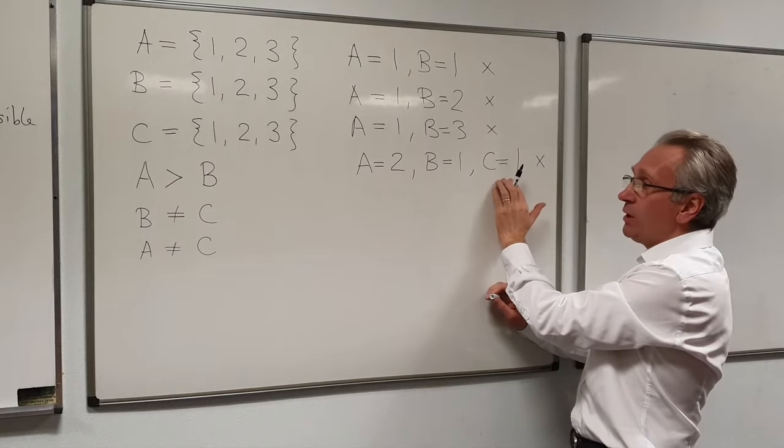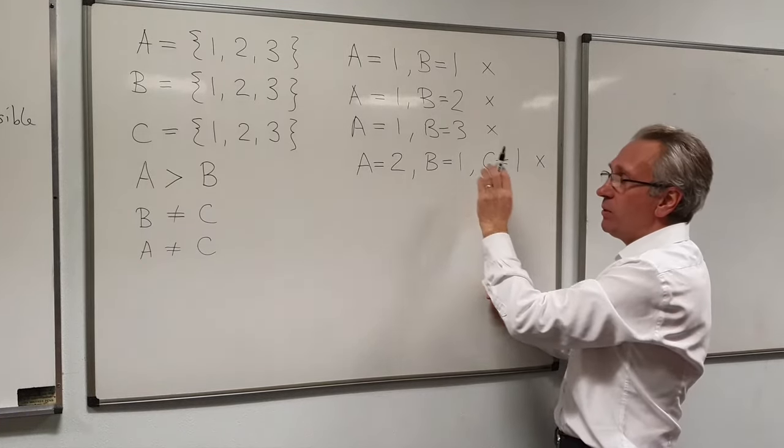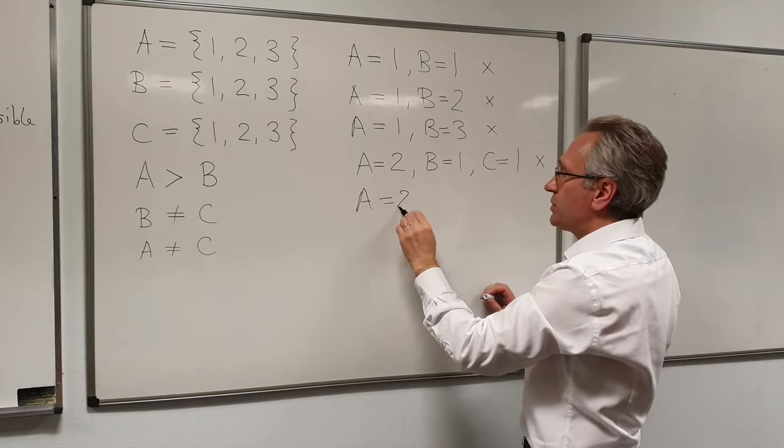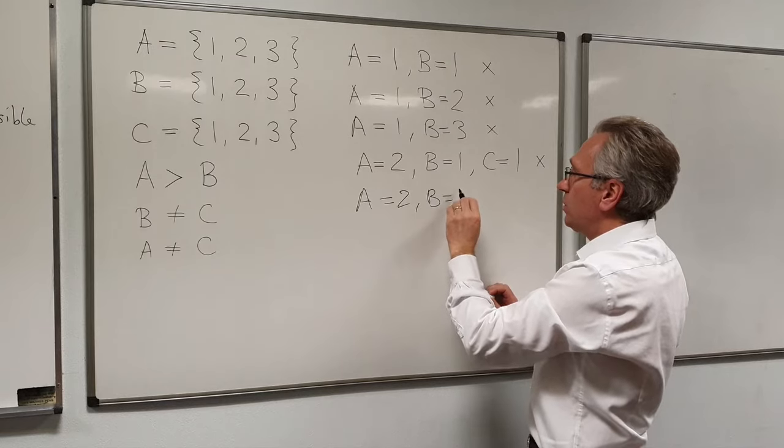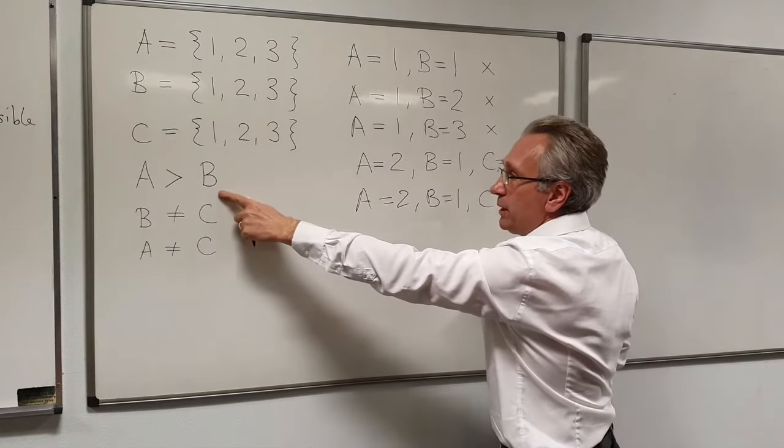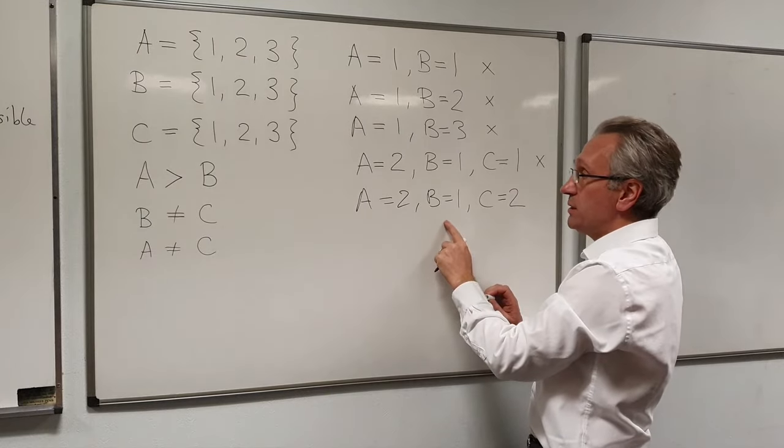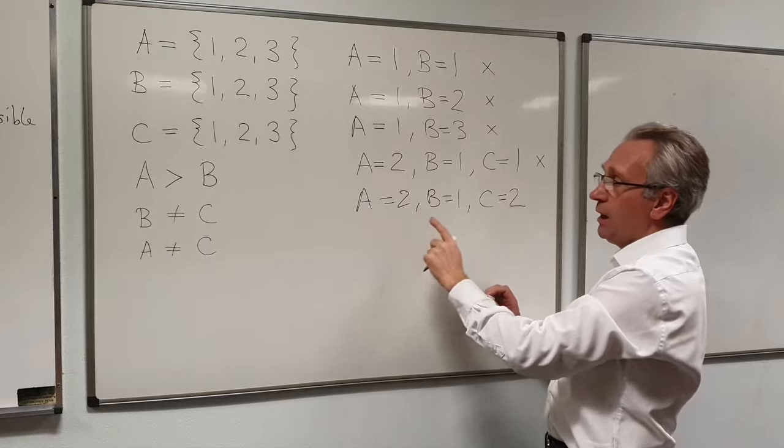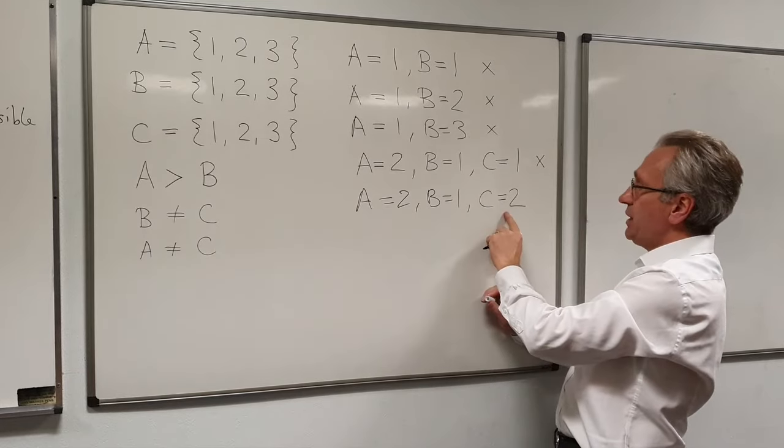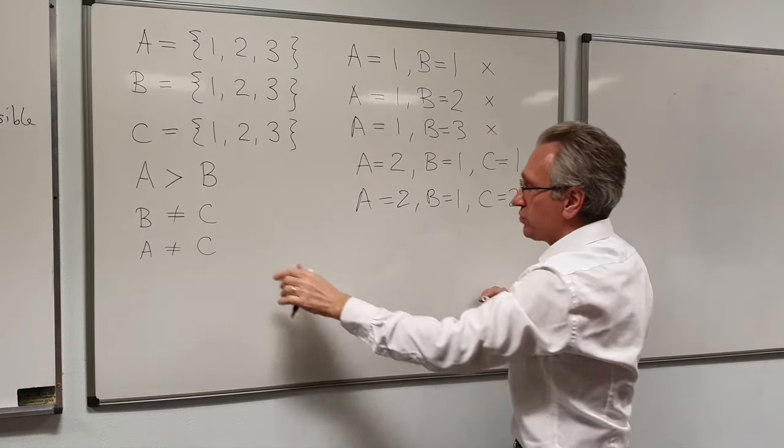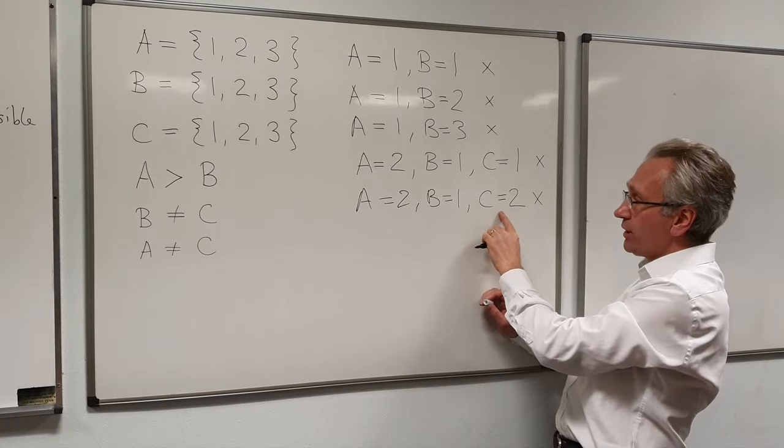So we backtrack on the last thing that we did, C equals 1, and we backtrack to a second value. A equals 2, B equals 1, C is equal to 2. That's okay for this, A is indeed greater than B. B is not equal to C, that's okay. A is not equal to C. Ah, so that one's no good because that constraint is broken. We now backtrack again here.